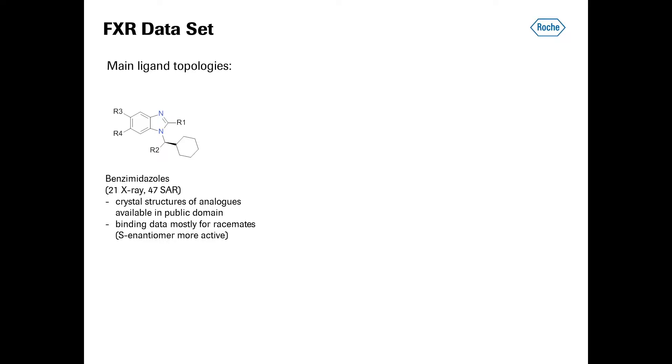Most IC50 data in that series are for the racemate. Typically from the synthesis, we had a 50 to 50 mixture of both enantiomers, but generally the S enantiomer, as is shown here, is considerably more active by 2 to 4 orders of magnitude. Also, in crystallization trials, when FXR was incubated with the racemate, the S enantiomer crystallized preferentially.